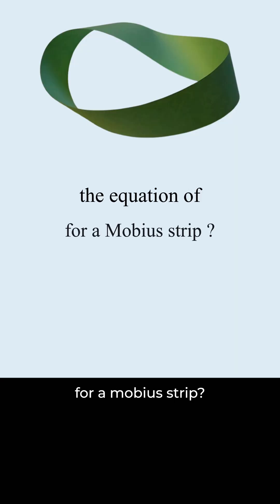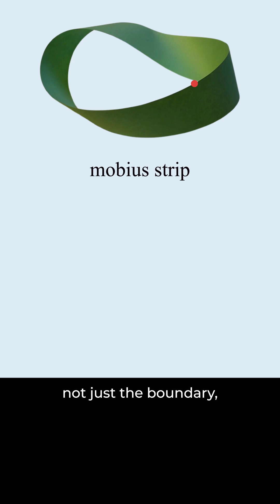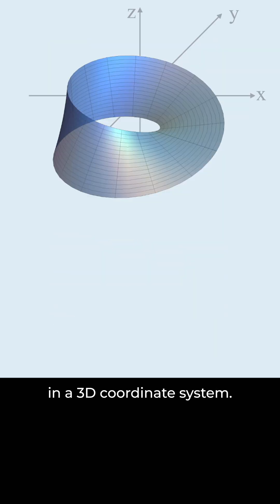What is the equation for the Möbius strip? Remember, the Möbius strip includes not just the boundary, but also the entire surface. Let's think of it as a circular band. We'll place this strip in a 3D coordinate system.